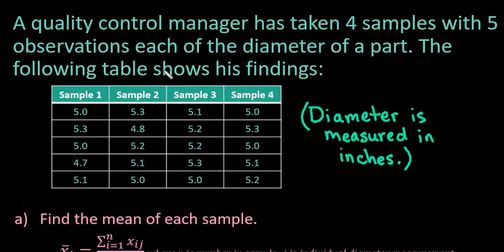A quality control manager has taken four samples with five observations each of the diameter of a specific part. Each diameter is measured in inches, and the following table shows the findings of the quality control manager. We have the individual inch measurements for each part from the samples.